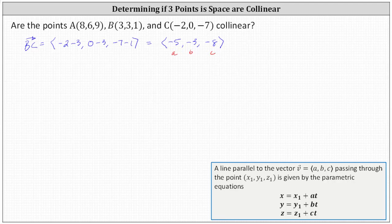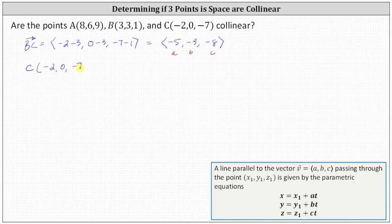For the point, we can use point B or point C — it doesn't matter. I'm going to use point C. So using point C for the parametric equations, we know x1 equals negative two, y1 equals zero, and z1 equals negative seven. Now we can determine the parametric equations for the line containing points B and C.